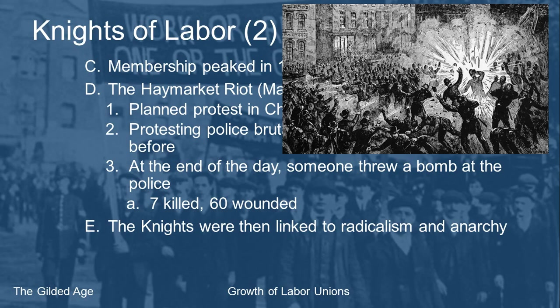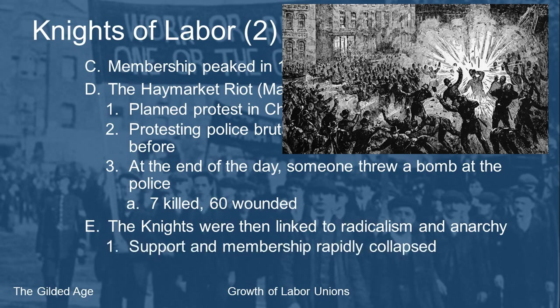Even though they couldn't figure out who threw the bomb, several members of the Knights of Labor leadership were arrested — since they had organized the protest — and the Knights were linked to radicalism and anarchy. Part of the problem was that flyers circulated saying the Socialist Party of America and the Knights of Labor were co-hosting the protest. Because of those flyers and someone targeting police, the Knights were labeled radical, and their support from members and the public rapidly collapsed.